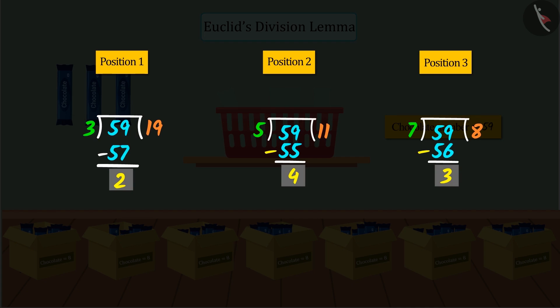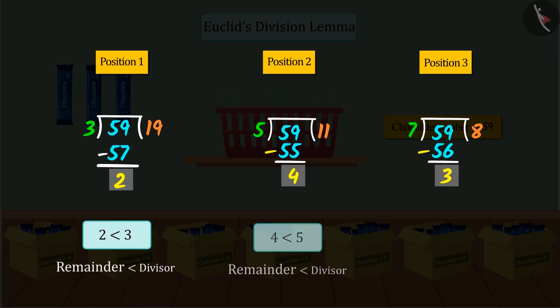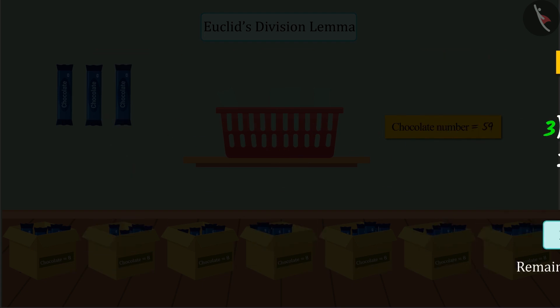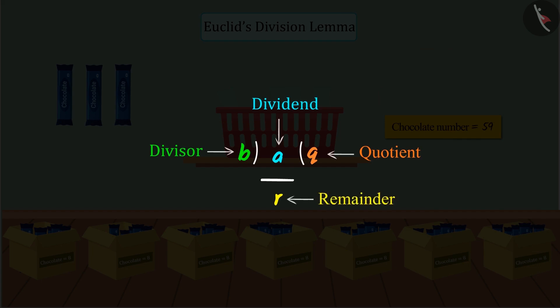On observing carefully, we get to know that in all the 3 situations, the remainder is less than the divisor. Where we represent dividend by A, divisor by B, quotient by Q, and remainder by R.